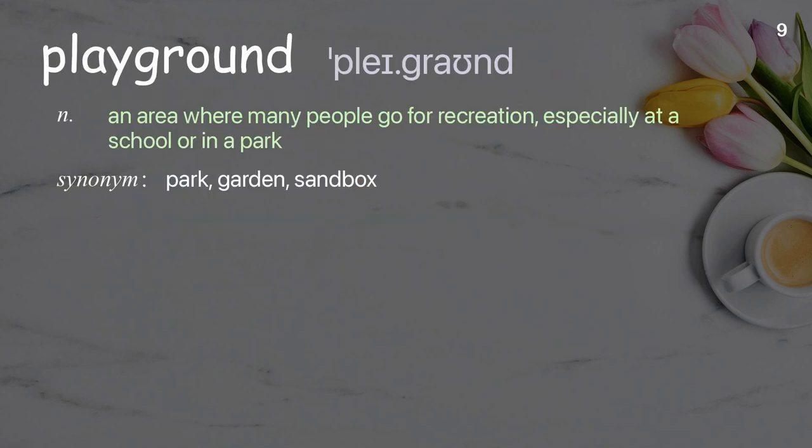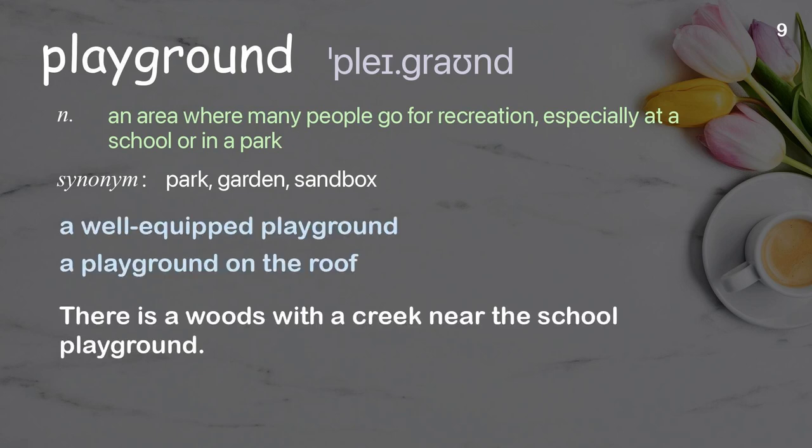Playground: an area where many people go for recreation, especially at a school or in a park. Examples: A well-equipped playground. A playground on the roof. There is a woods with a creek near the school playground.